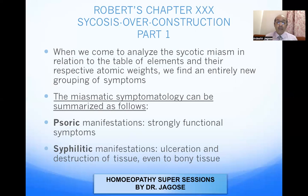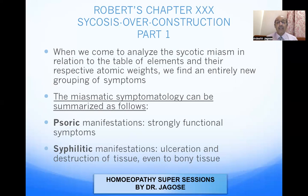In short, he gives a summary of the three miasms: psora, syphilis, and psychosis. He says that the psoric manifestations are strongly functional symptoms. In psora, you will only get functional disturbances — those which are reversible. There is no irreversible pathology, or if any pathology is present, it is always reversible. So the psoric manifestations are strongly functional symptoms.